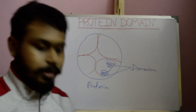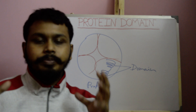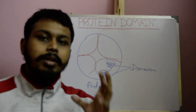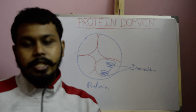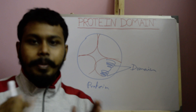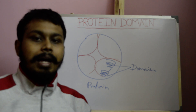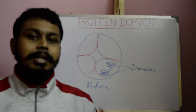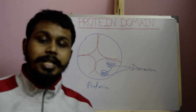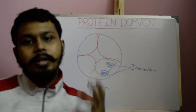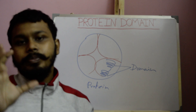Now, what is a protein motif? A protein motif is a short peptide sequence that mostly has a secondary structure — that is, an alpha helix, beta sheet, or random coil.